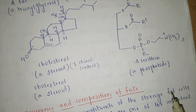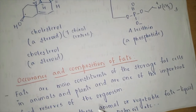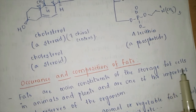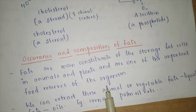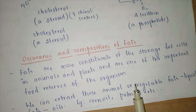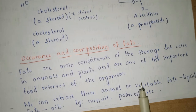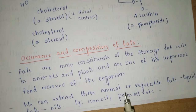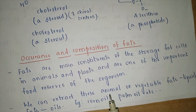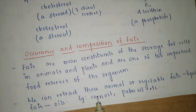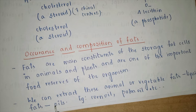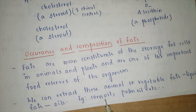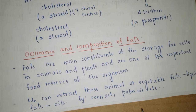Fats are the main constituents of storage fat cells in animals and plants, and are one of the important food reserves of the organism — apart from glucose and carbohydrates. Fats are stored in the liver. We can extract animal or vegetable fats; when they are liquid fats they are called oils, for example corn oil and palm oil.